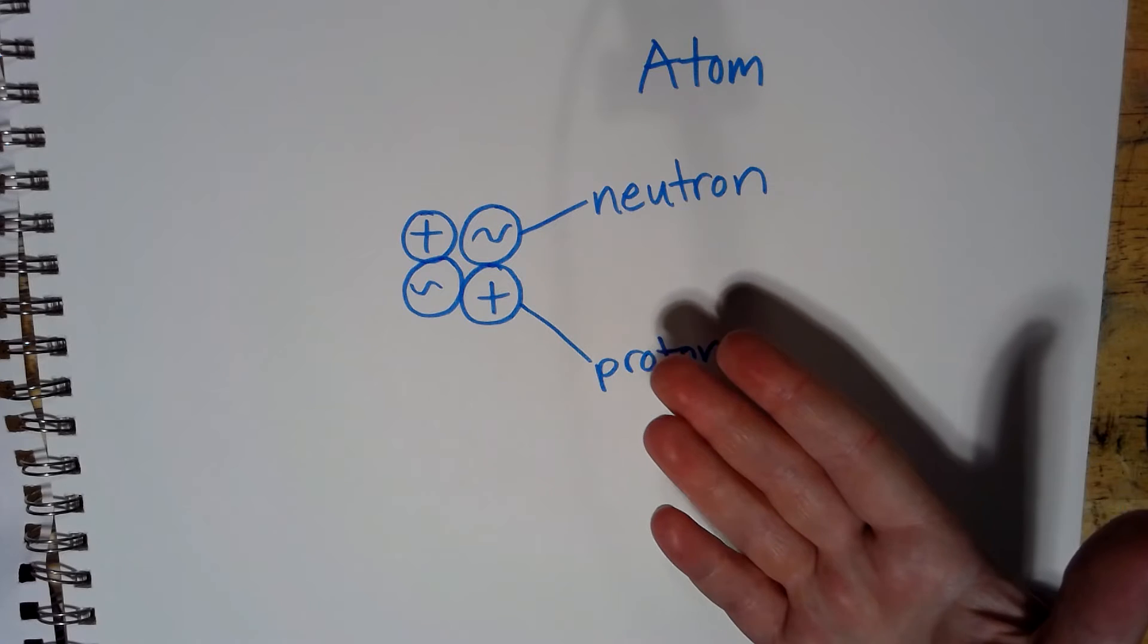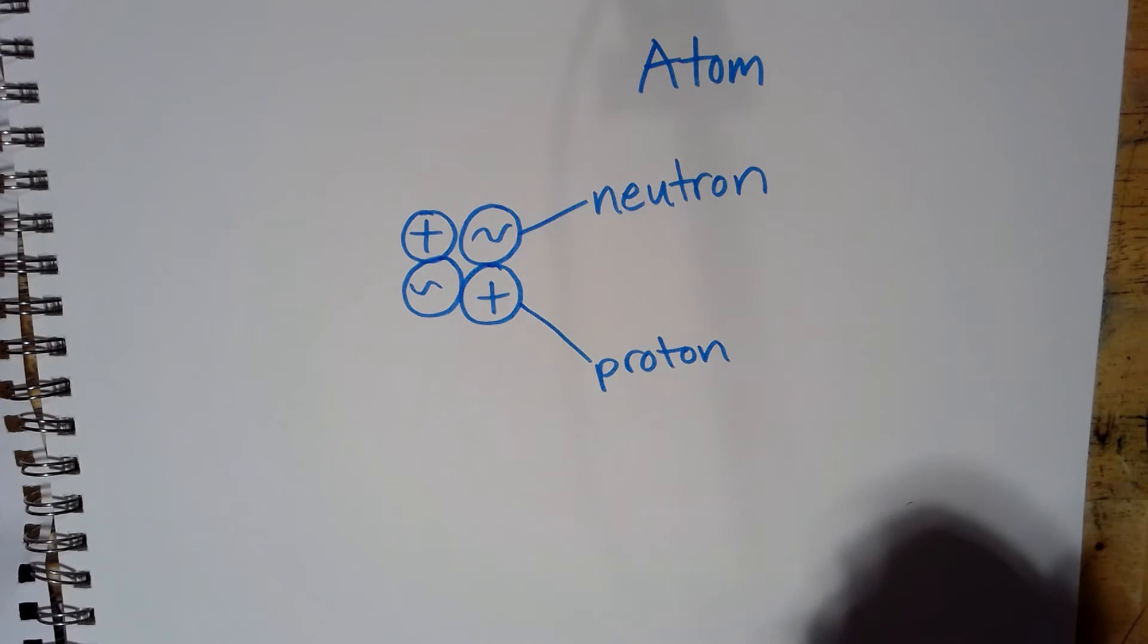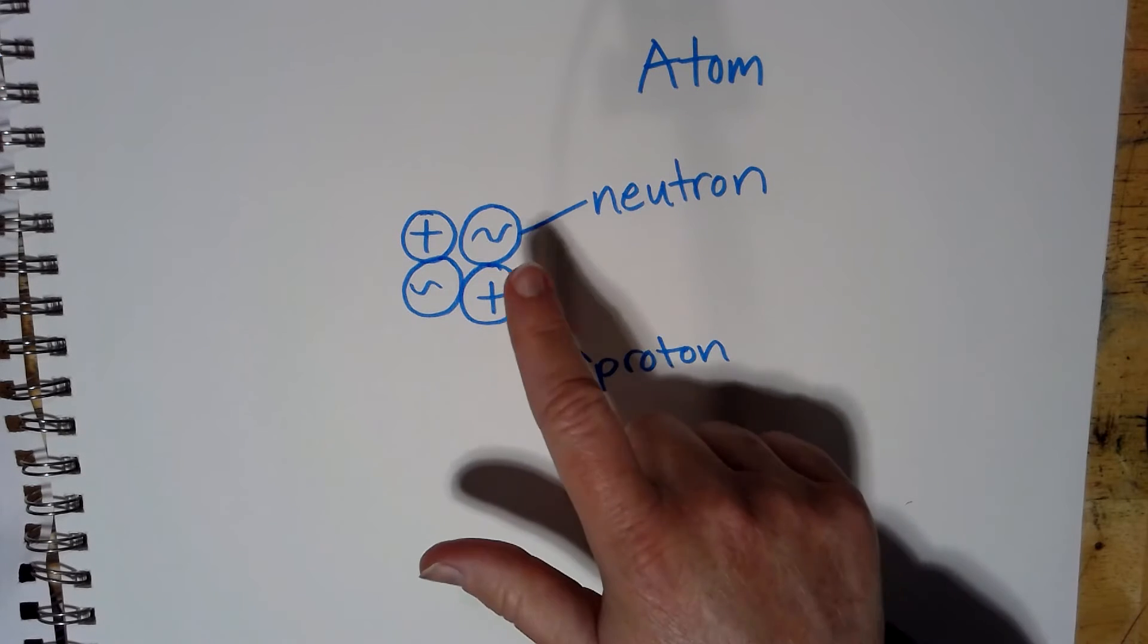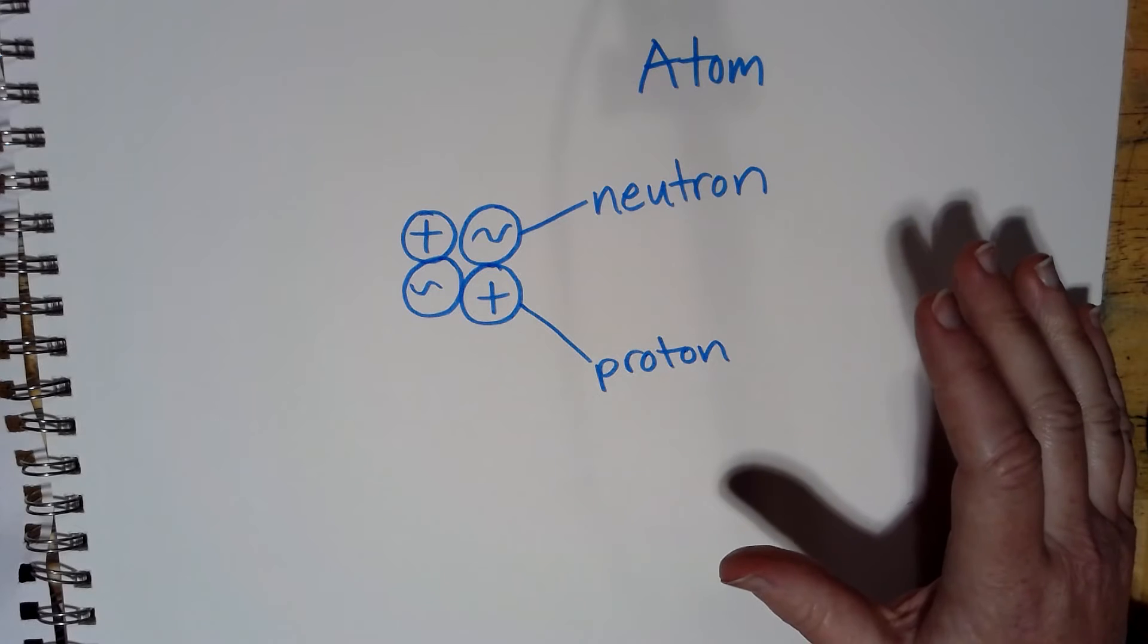Now we can actually see these. We have a microscope that's powerful enough that can zoom in onto the atomic particles of an object, and we see little dots, and we know that that's the nuclei of the atoms of that object.